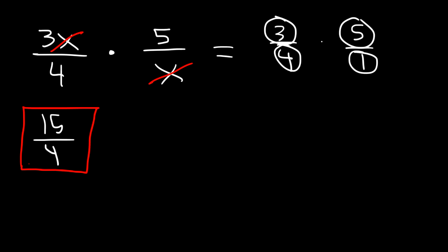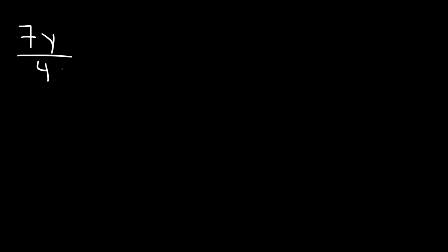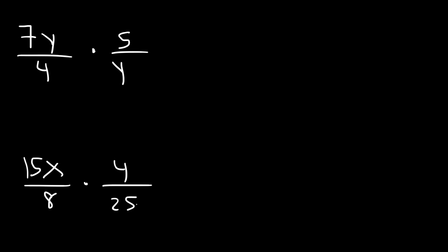This is an improper fraction, since the numerator is greater than the denominator. For practice, go ahead and work on these two examples: 7y divided by 4 times 5 over y, and also 15x divided by 8 times 4 over 25x.